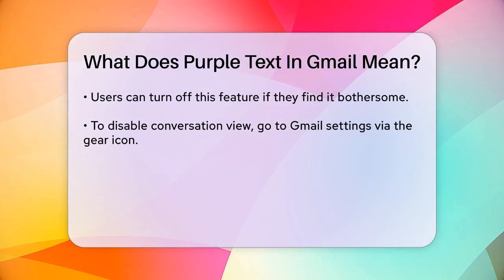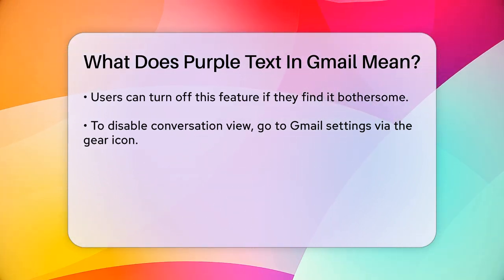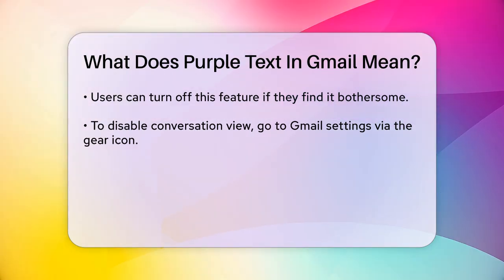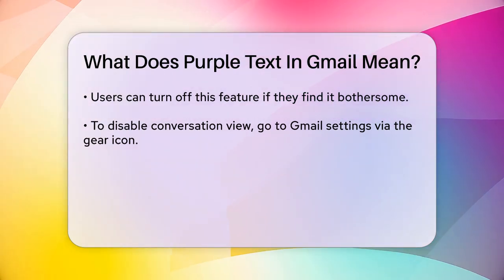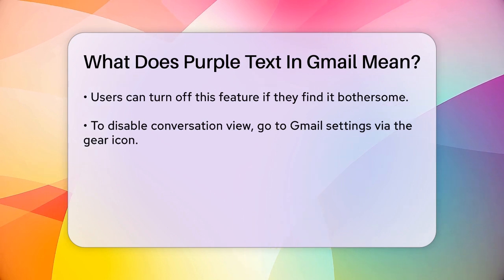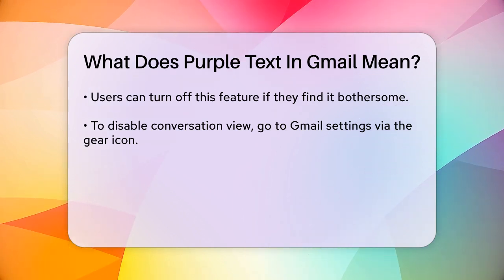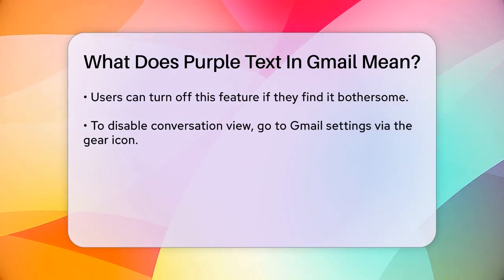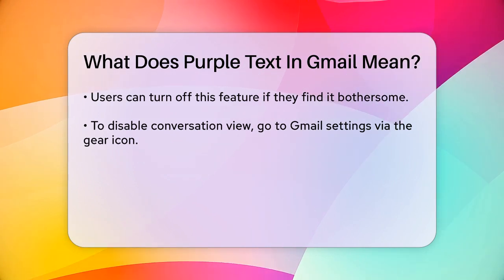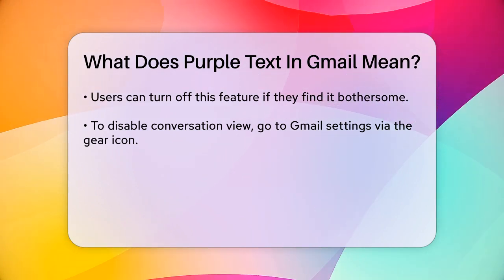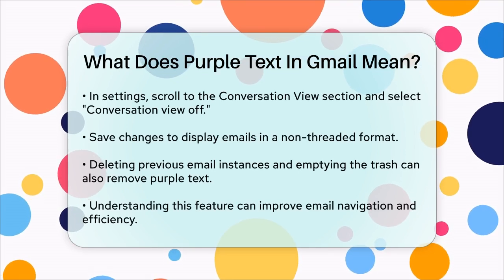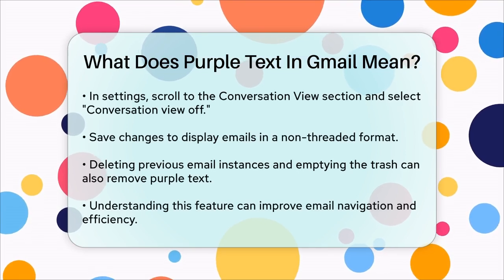If you find this feature annoying or prefer not to see the purple text, you can easily turn off the conversation view in Gmail. Here's how: Open Gmail, click the gear icon in the top right corner, select Settings, then scroll down to the conversation view section. Choose 'Conversation view off' and click 'Save changes.' This will display your emails in a non-threaded view.